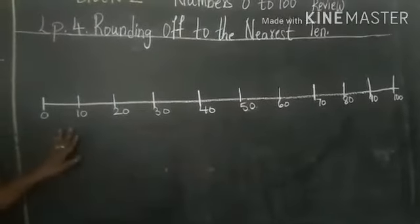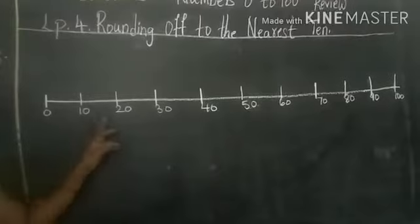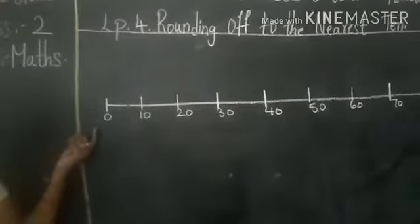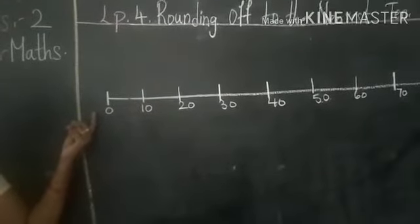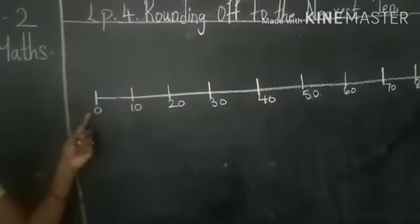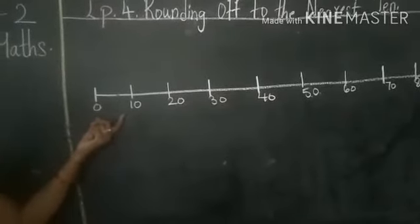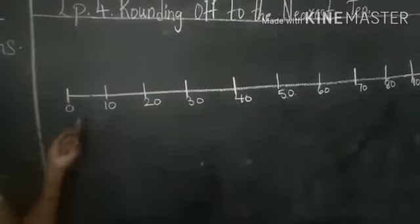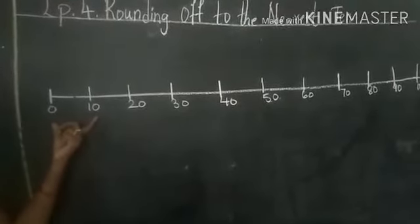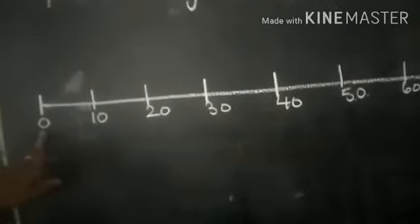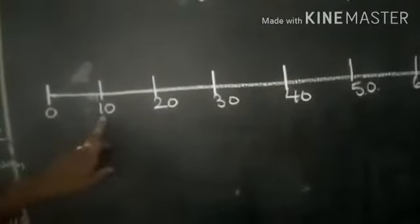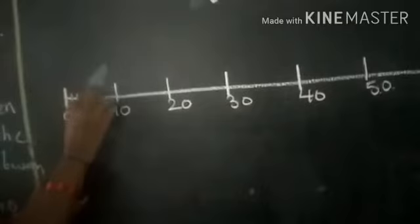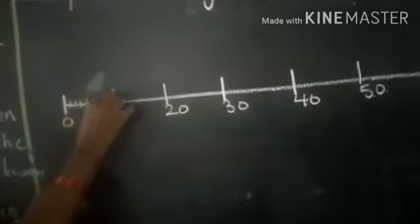Now children, where would you write the number 5 on this number line? We would write 5 in between 0 and 10 children. What are the numbers in between 0 to 10? 1, 2, 3, 4, 5, 6, 7, 8, 9, 10.